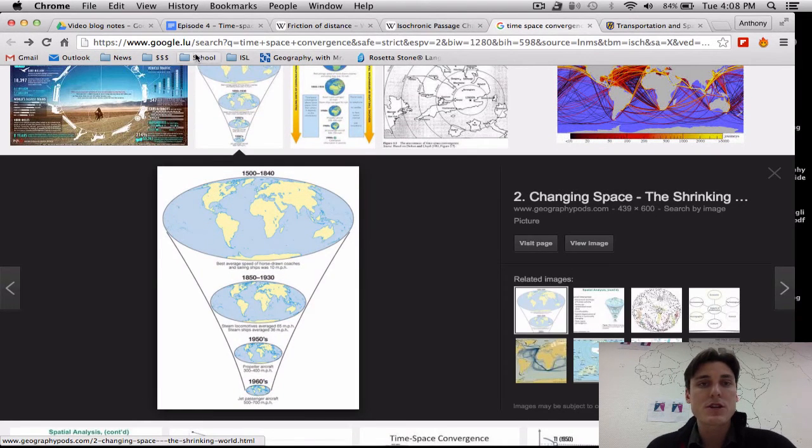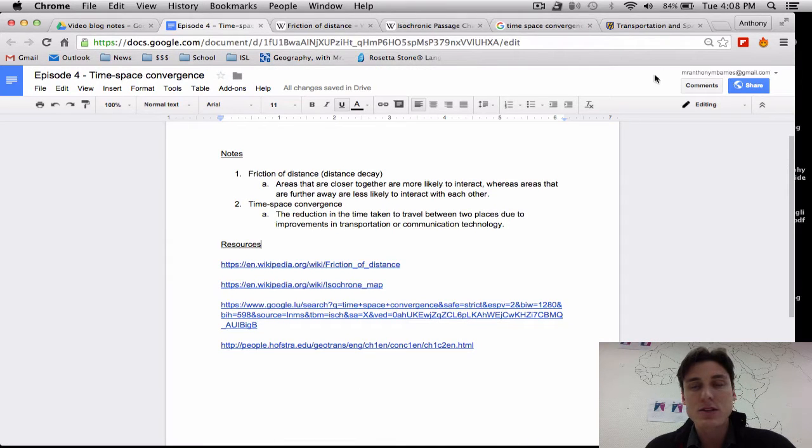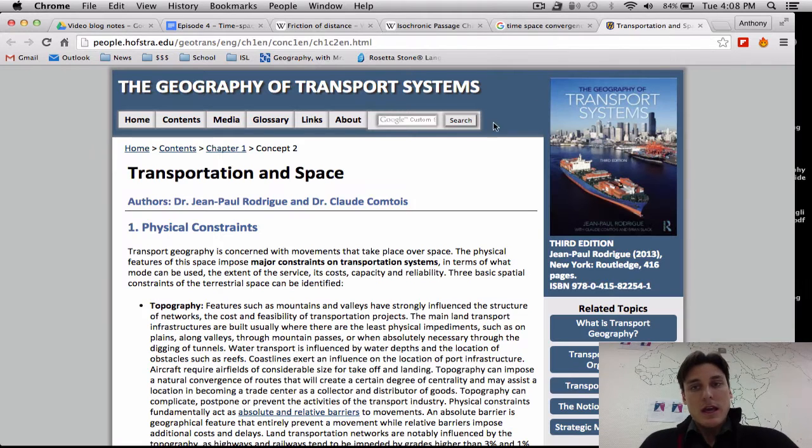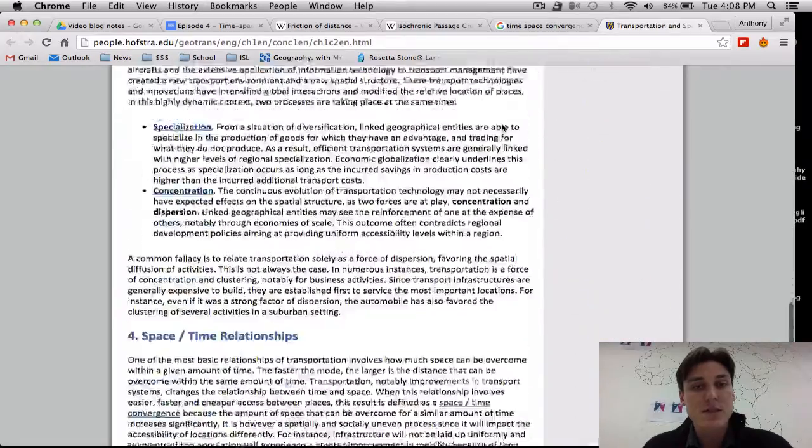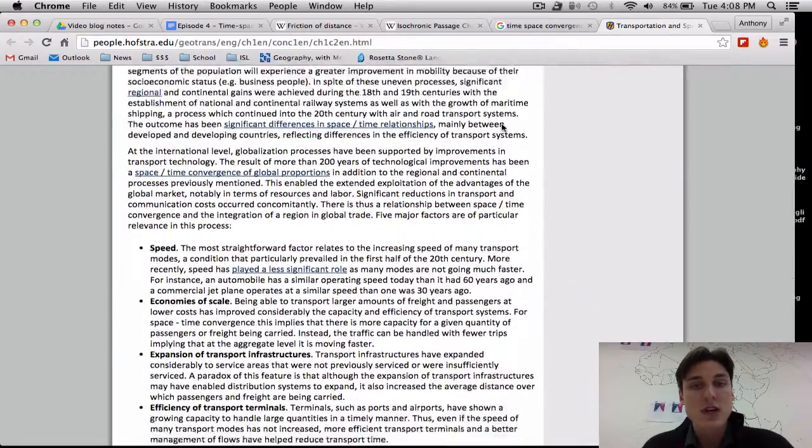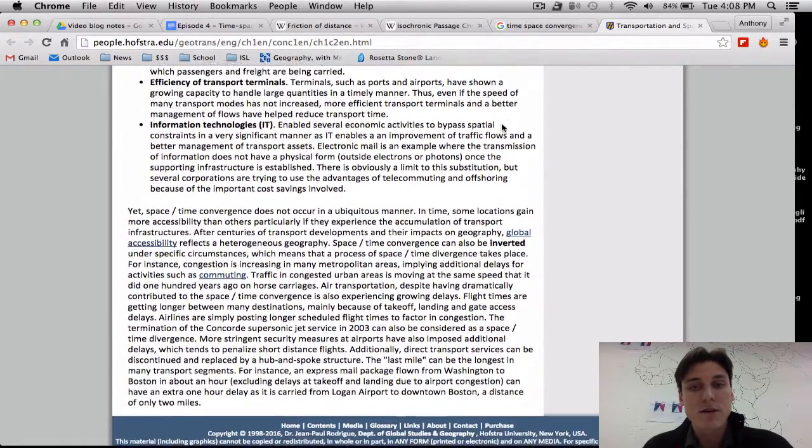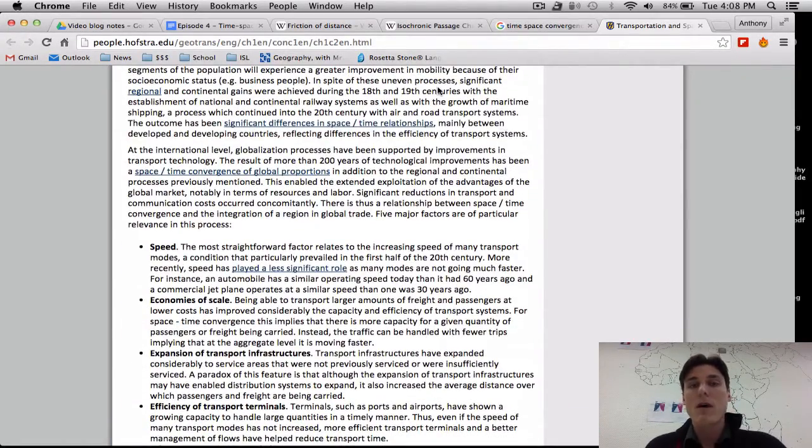All right. On top of that, if you want more information about these topics, the last link in my notes here, which will be in the description below, is a link to, I think, one of the best resources on the internet as far as the geography of transport systems goes because this is a curated source by professors that have studied transport systems and are collectively putting these resources together. This section right here is specifically on the time-space convergence and friction of distance and how it's changed over time in the last 200 years as a result of communication and technology. So I hope all that is informative and I'll be back in episode five.